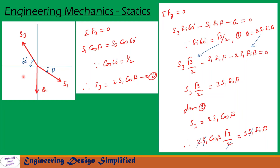Now let us see forces and reactions at point C. At point C, Q is acting downwards, S1 is acting towards this direction with angle beta from the horizontal, and S3 is acting towards this direction with angle 60 degrees from the horizontal. For sigma Fx equal to 0, horizontal component S1 cos beta equals S3 cos 60. Since cos 60 equals 1/2, we get S3 equal to 2S1 cos beta. Let us call that equation 2.